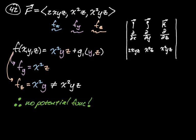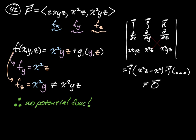We can also calculate the curl to confirm. I'll just do enough to show it's not zero — the i component: ∂y(x²yz) − ∂z(x²z) = x²z − x², which is clearly not zero. We could keep going, but we already know this is not going to equal the zero vector, so there is no potential function.